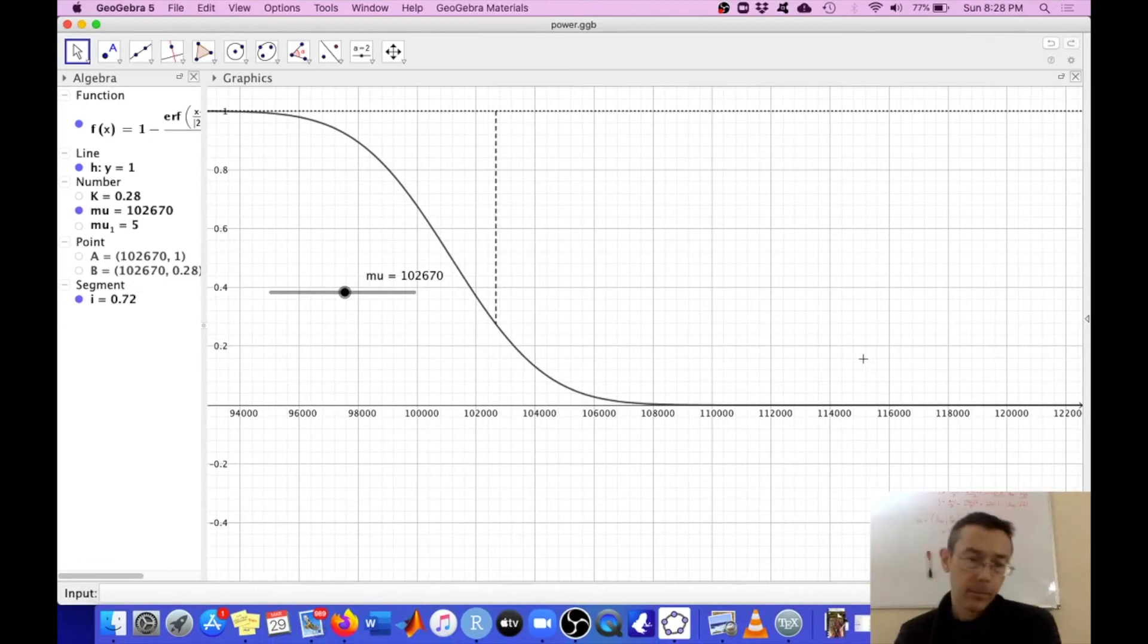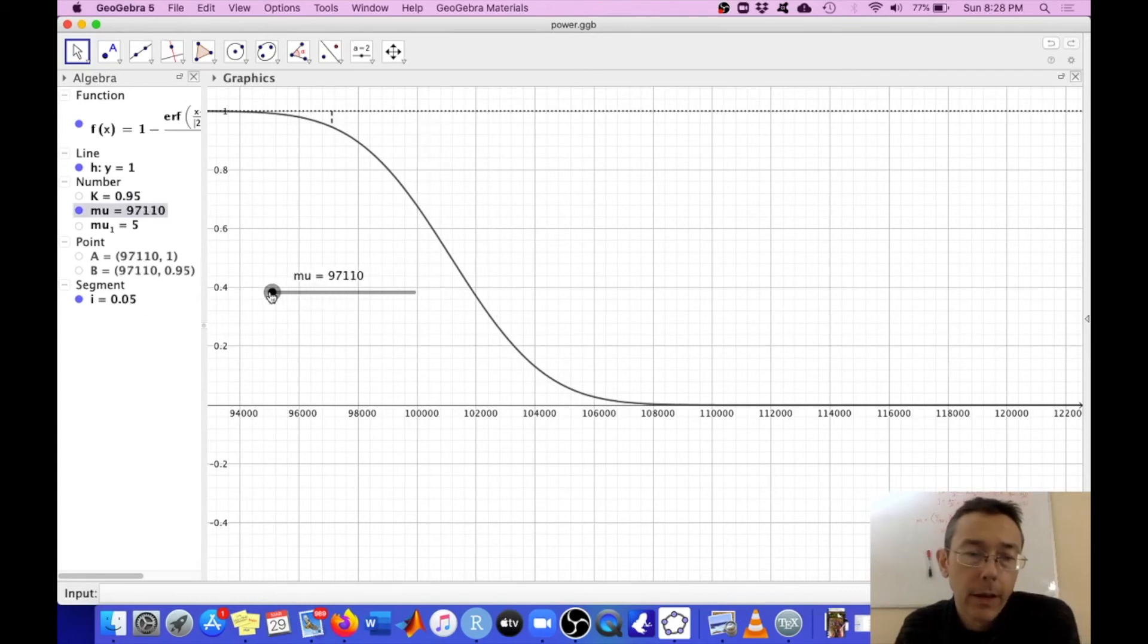So here I've drawn it. The dotted line is representing the K. It's the difference between one, this is the line y equals one, and the phi function, that normal CDF that we saw a minute ago. So let's start way over here at the left at mu equals 97,000.